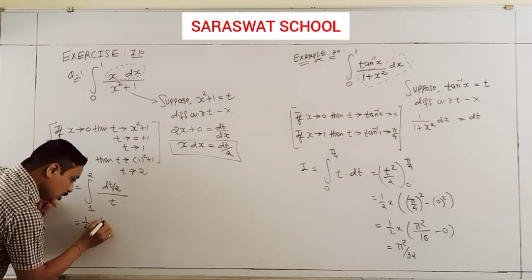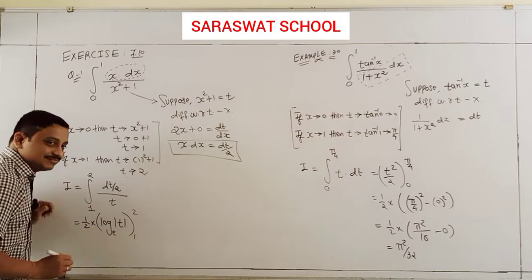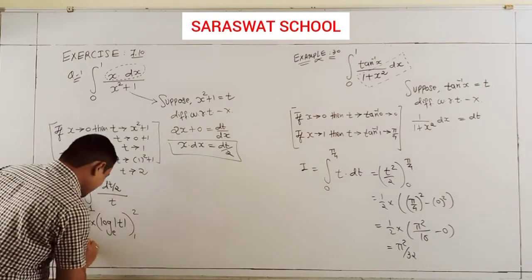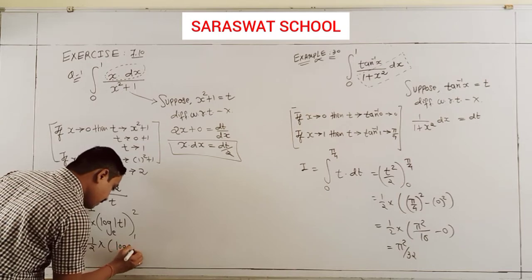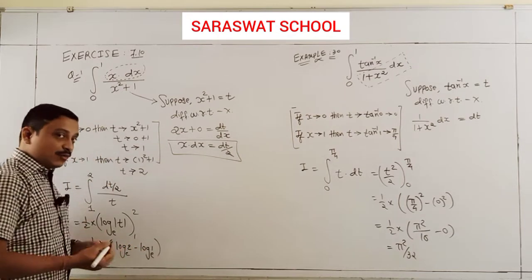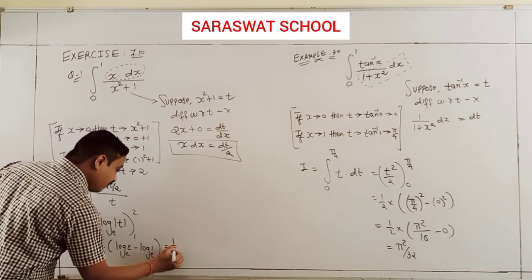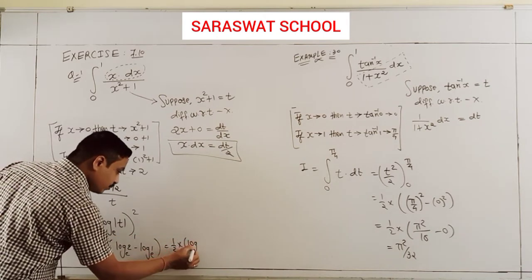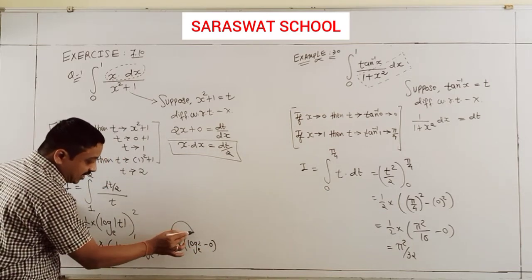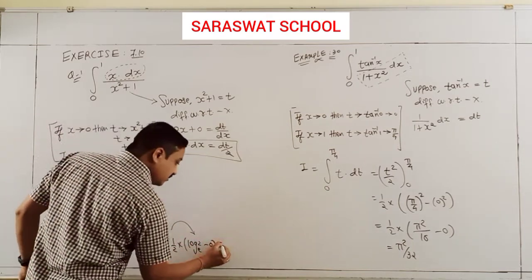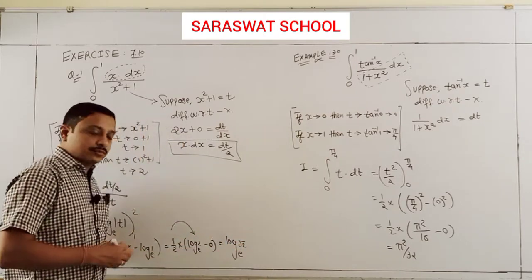So the result is (1/2) log|t|, with limit 1 to 2. Your answer: (1/2)(log 2 minus log 1). Since log 1 is 0, your answer is (1/2) log 2. And if you take the 1/2 inside, it is also equal to log√2. Both are true.